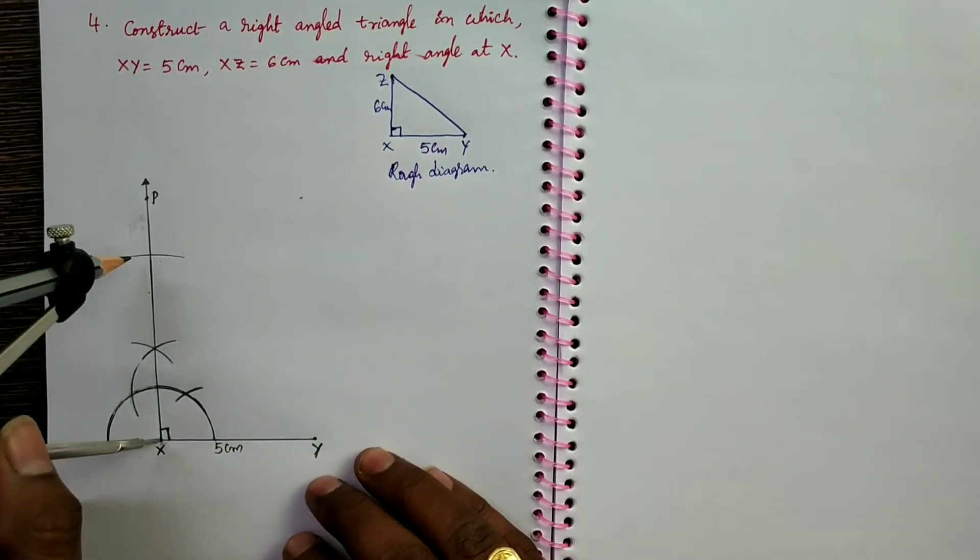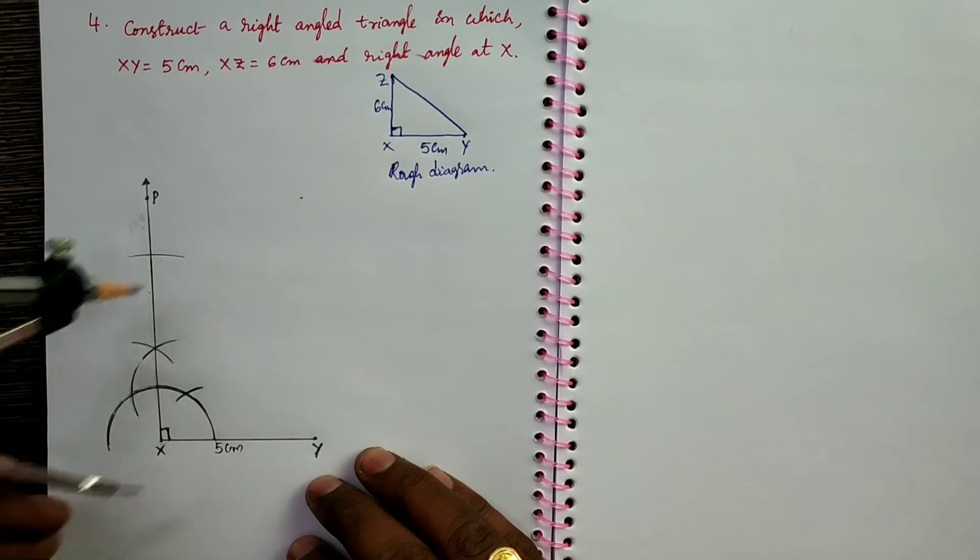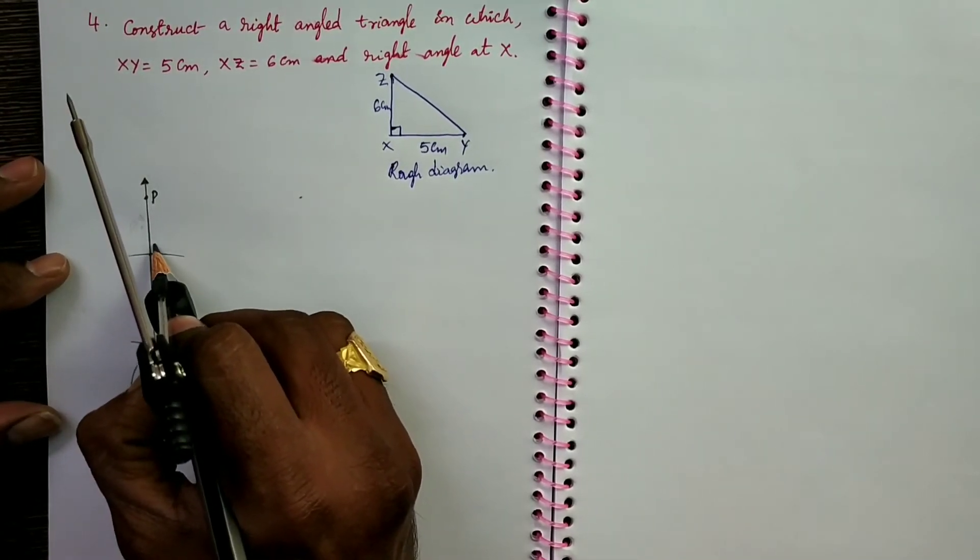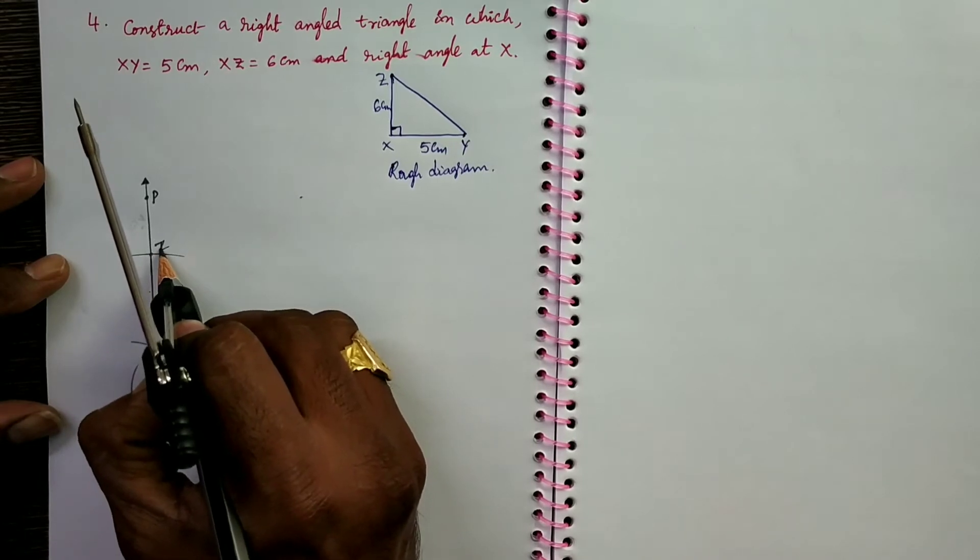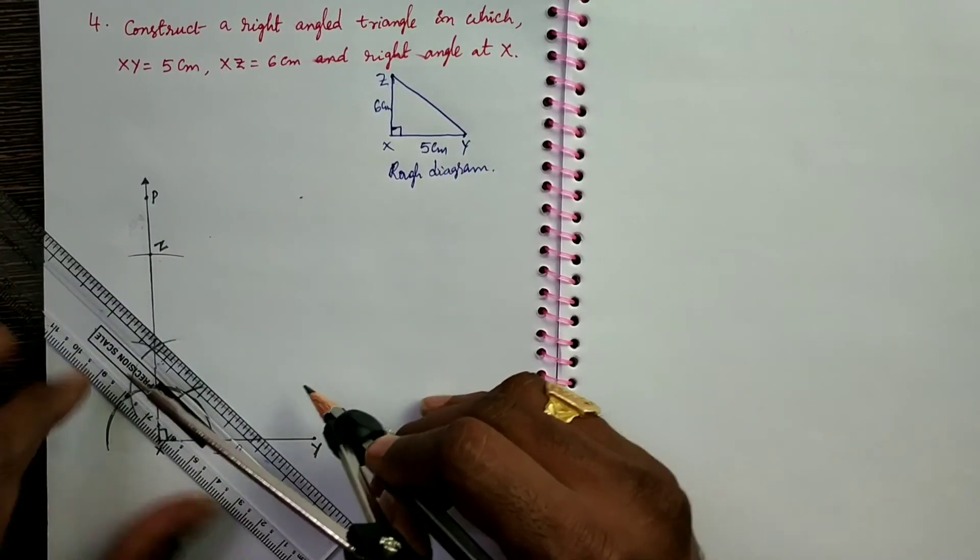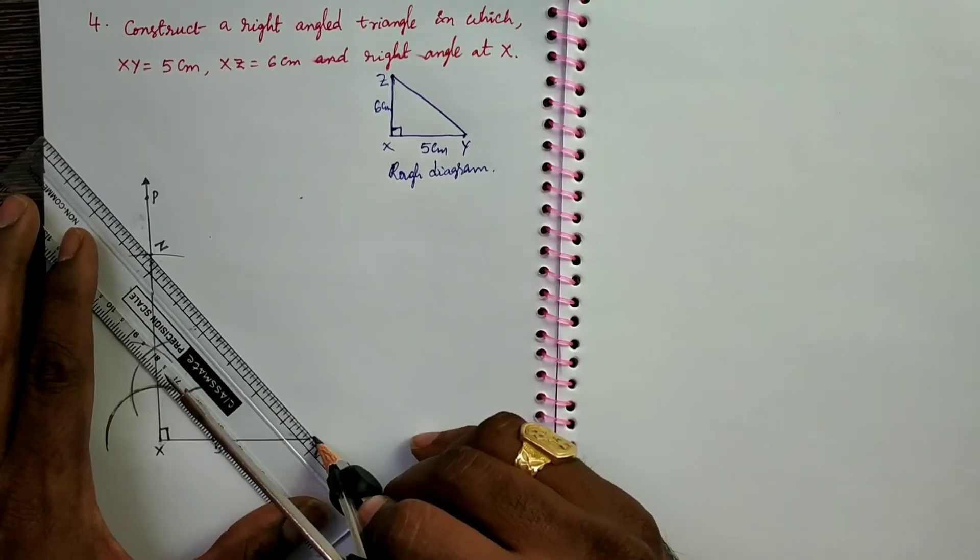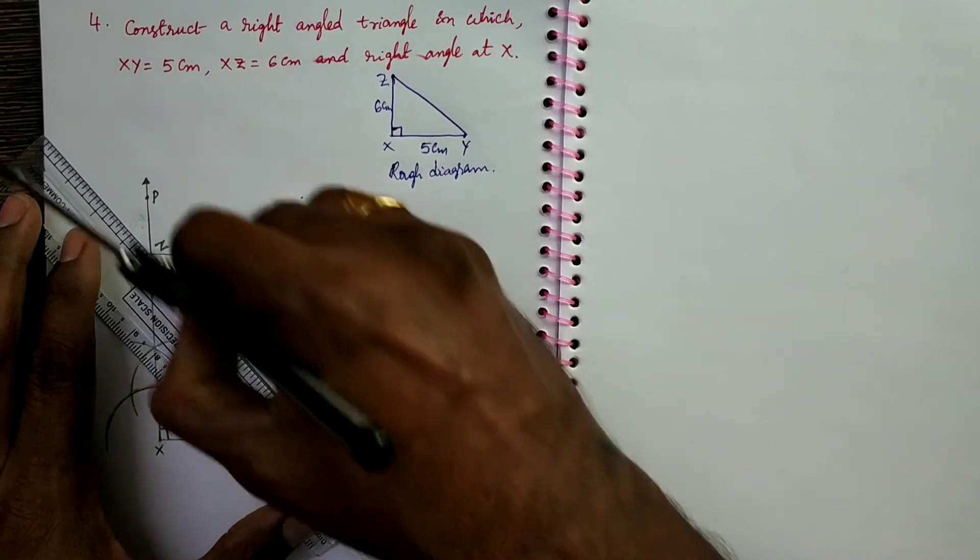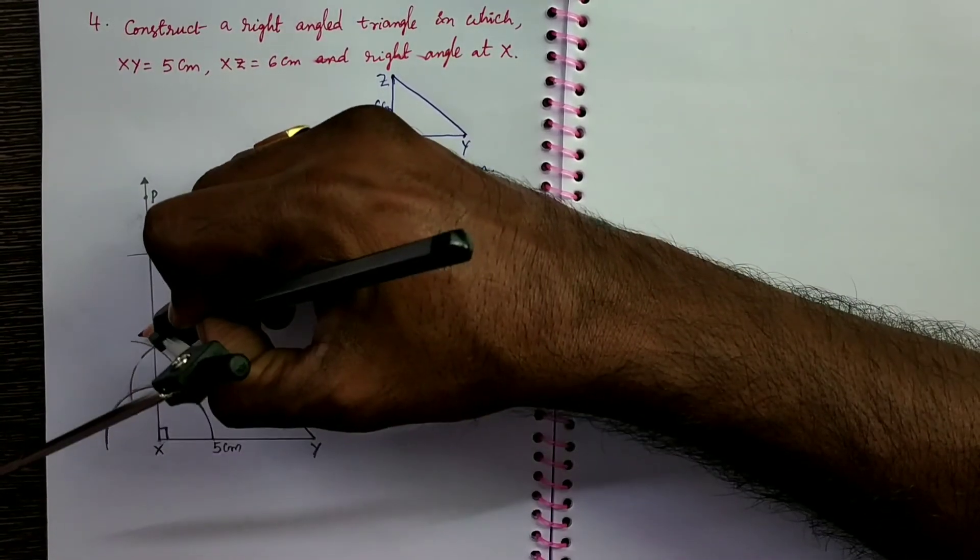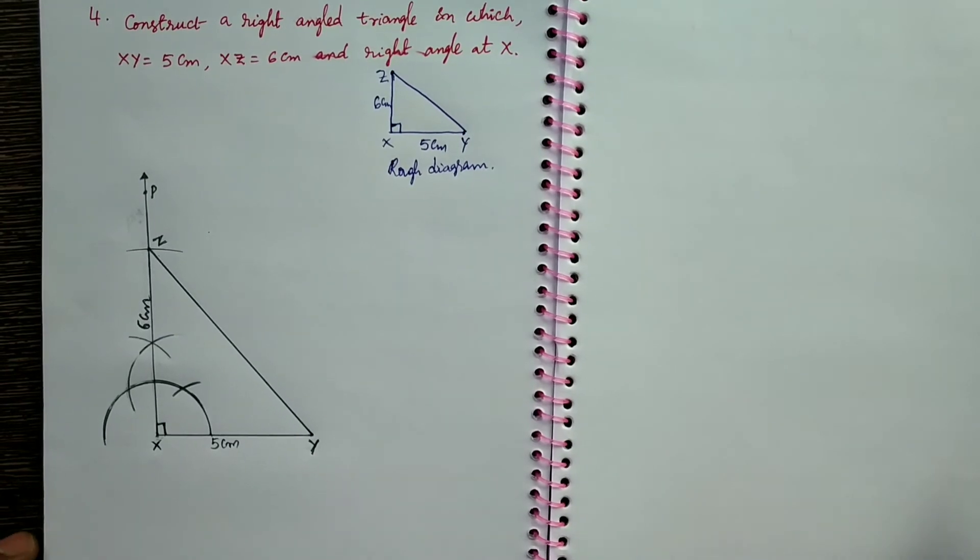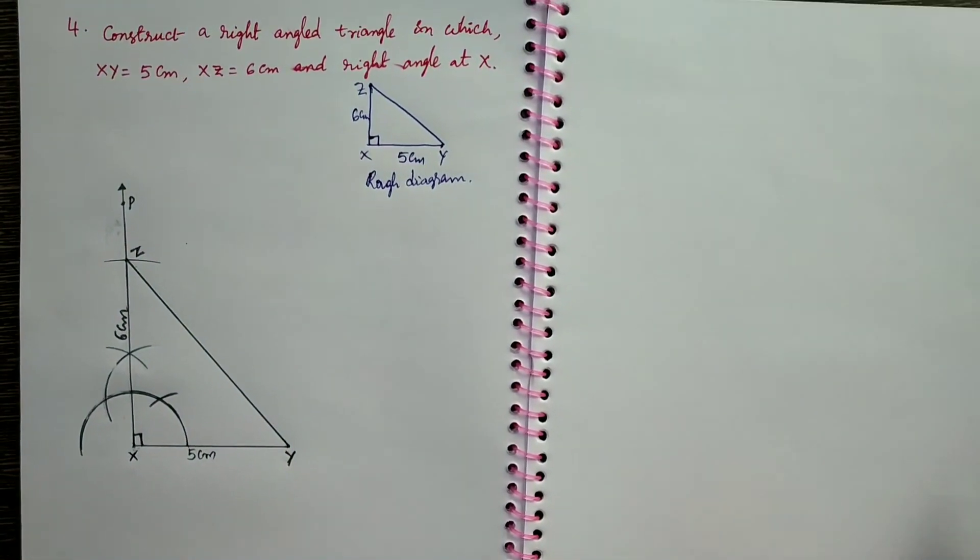Which cuts XP at Z. Take this intersecting point as Z. Now you join YZ. XZ is 6 cm. This is the required construction of the given triangle.